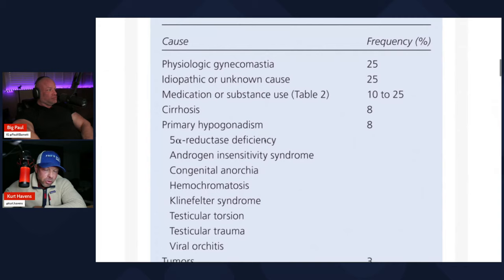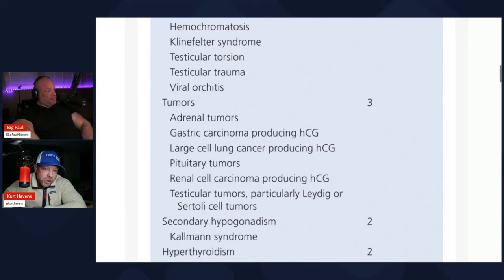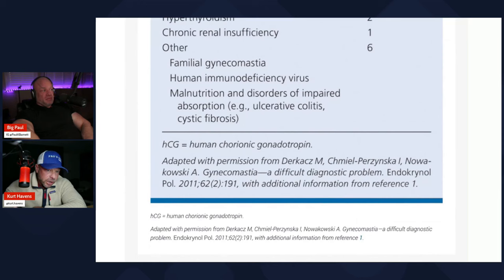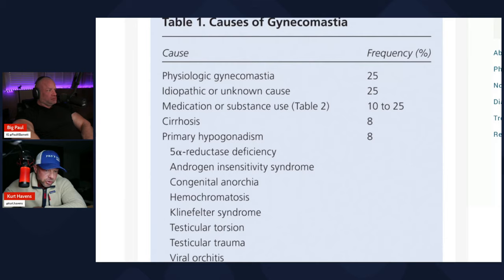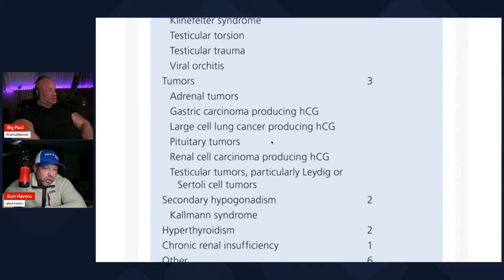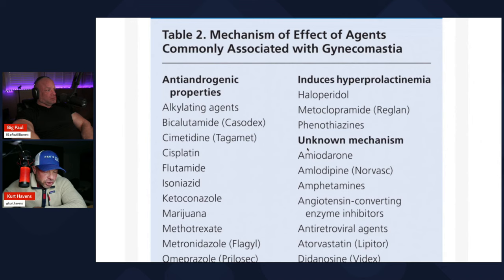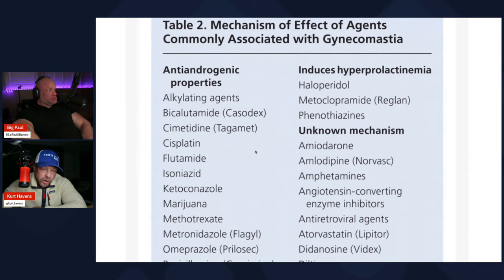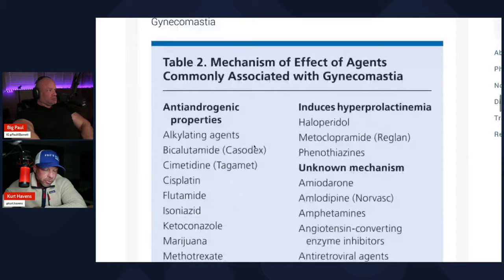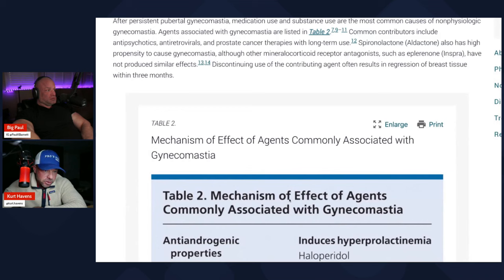Mostly what we're concerned with are the hormonal causes. Chronic renal insufficiency will cause it because it's changing the way you're dealing with androgens; cirrhosis changes the way your body deals with estrogen. What's interesting is estrogen is the major driver of gynecomastia, but it also requires progesterone, IGF, and growth hormone. You could say it requires testosterone, although testosterone itself isn't driving it — it's the aromatization of testosterone into estrogen. The androgen receptor itself is not involved in this, which is slightly different from the situation in breast cancer.